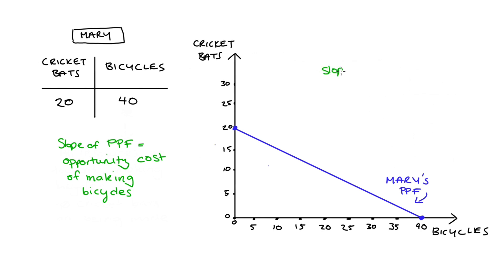If we just do the sums, slope is rise over run. To get between our two intercepts, there's two perfectly good points. I can fall 20, so that's negative rise, and I would run to the right 40, and so I get negative a half. And this means that when Mary produces one more bicycle, she gives up half of a cricket bat.